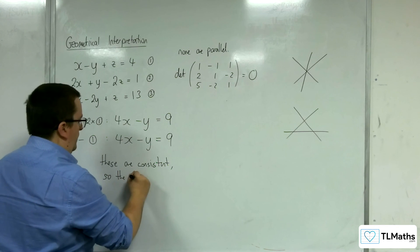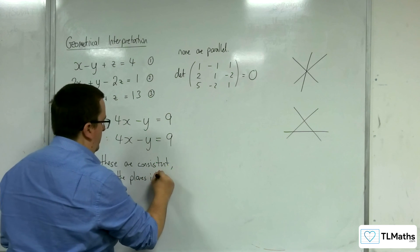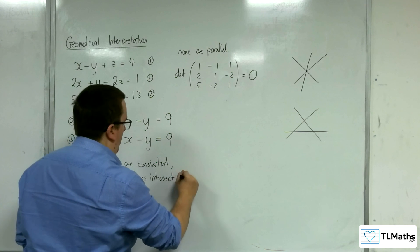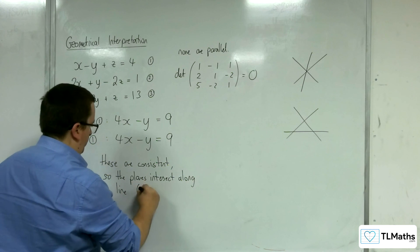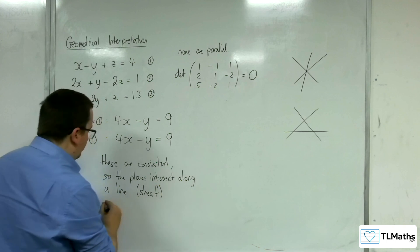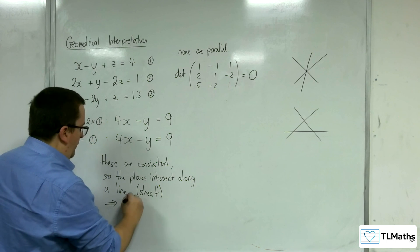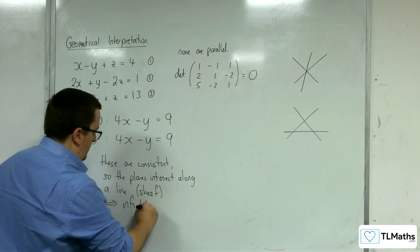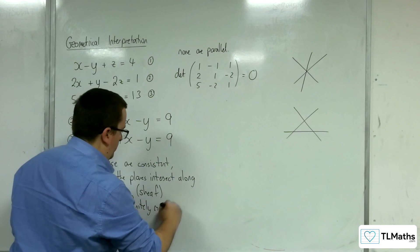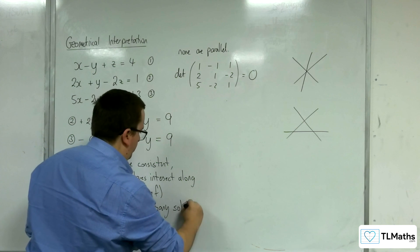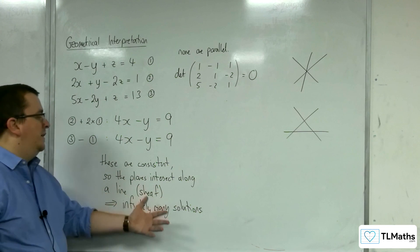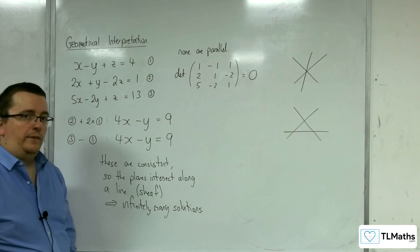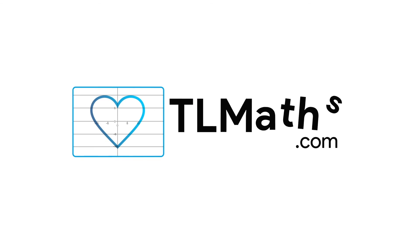So the planes intersect along a line. So that is a sheaf. So there are infinitely many solutions along that line. So that's how we can determine which of the two it is.